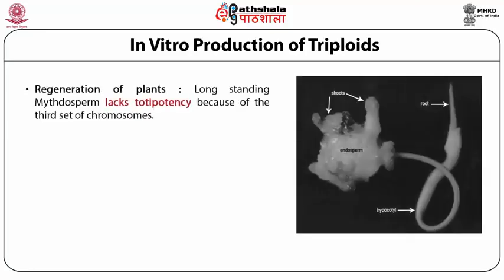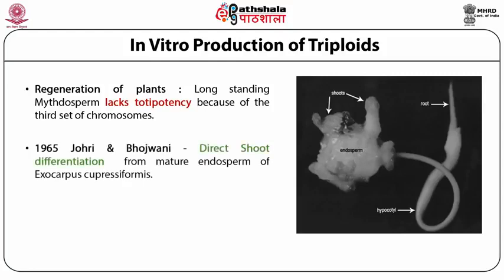For a very long time, it was a kind of myth among embryologists and tissue culturists that the endosperm tissue, which has an additional set of chromosomes, is not capable of organizing into plants. Because in nature there is no example of the endosperm forming an organ, even a root, or even tracheidal differentiation. So people felt that endosperm lacks totipotency because of the presence of the third set of chromosomes. But in 1965, for the first time, in the case of Exocarpus cupressiformis decoded seed cultures, Jory and Bojwani observed the differentiation of shoot buds from the surface of the endosperm.